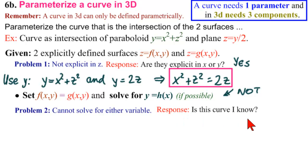So what's our response now? Is this a curve I know? Is this a curve I know? I can't solve it, can't get explicit, but is it something I know of? And the answer here is yes. What is this curve right here? It's a circle. It's a circle in x and z, right?